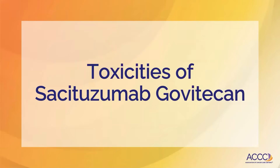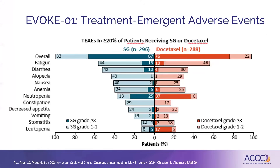Let's finish up with the toxicities of sasituzumab govetecan, which has a slightly different payload. This is the EVOC-01 trial — single agent sasituzumab govetecan on the left versus docetaxel on the right. We had a similar number of overall toxicities with fatigue, but diarrhea and neutropenia were really the big story here. About 42% of patients had diarrhea, 10% of which was grade 3-4, meaning greater than seven stools per day. And 25% of patients had grade 3-4 neutropenia, meaning an ANC of less than 1,000. These are two of the common toxicities to watch for.